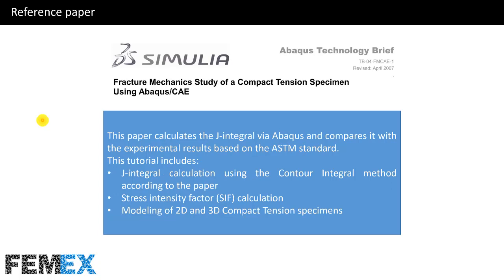Now I want to talk about the reference paper. This paper calculates the J-integral via Abaqus and compares it with the experimental results based on the ASTM standard. This tutorial includes J-integral calculation using the contour integral method according to the paper, stress intensity factor calculation, and modeling of 2D and 3D compact tension specimens.